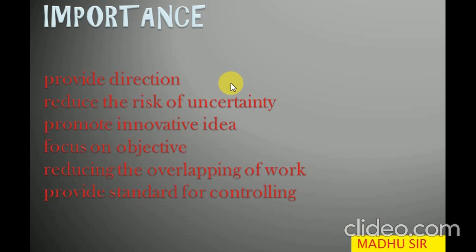The next importance of planning is reducing the overlapping of work. For example, if our objective is a 90% score within 120 days and we are in commerce with four subjects, we allocate 30 days to accounting, 30 days to mathematics, 30 days to business studies, and 30 days to management accounting. This way, no work overlaps.